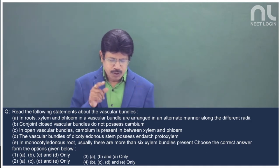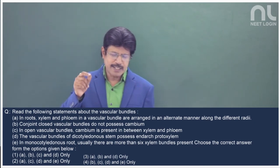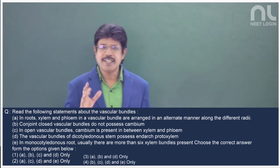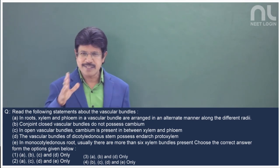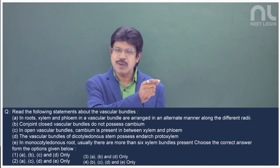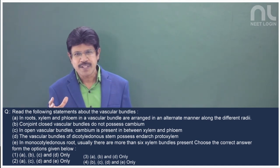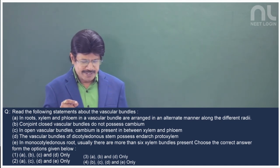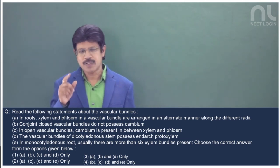Option E: in monocotyledonous root, usually there are more than 6 xylem bundles present. Yes, more than 6 xylem bundles present — it is polyarch. In the case of the dicot root, it is tetrarch. In the case of the monocot root, it is polyarch. In the dicot root there is scanty medulla or no medulla, whereas here it is wide medulla surrounded by metaxylem. So in this polyarch condition, as far as the monocot root is concerned, it is also right.